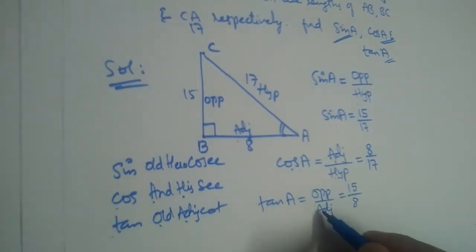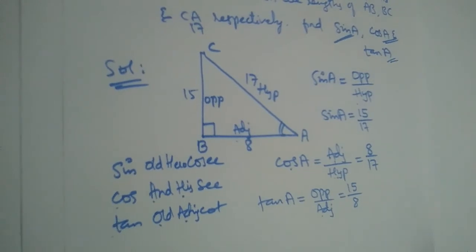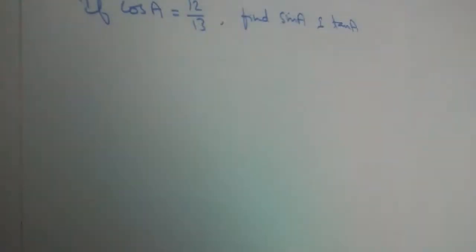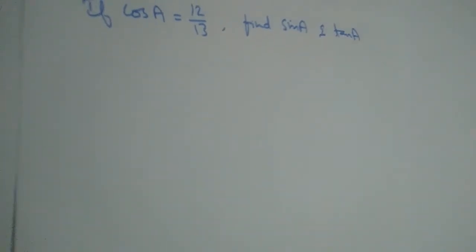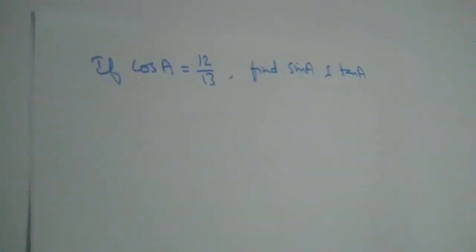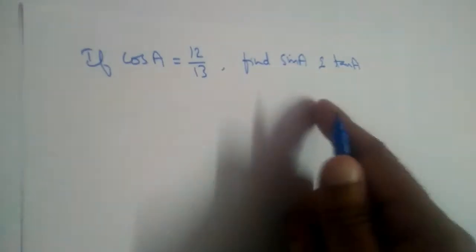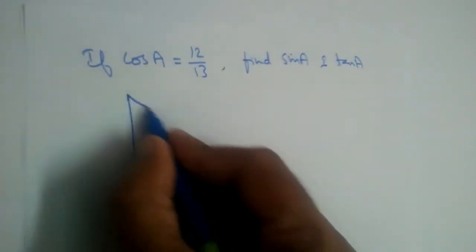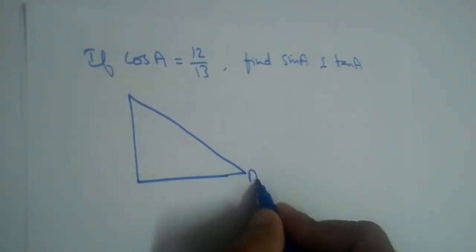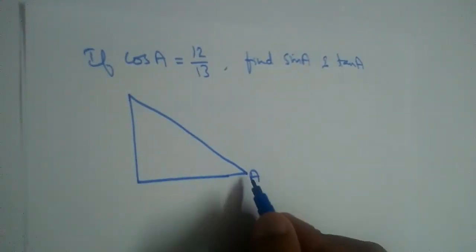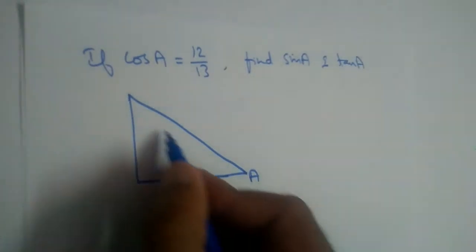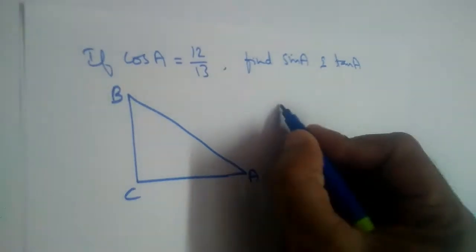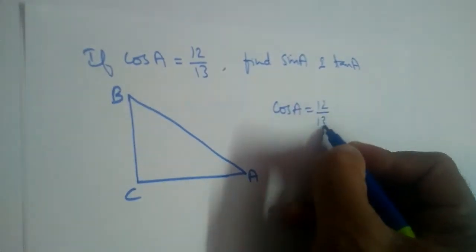We have solved this problem. Now we have one more problem: if cos A is 12 by 13, find the value of sin A and tan A. Let us take angle A here, B here, and C here. Cos A is 12 by 13.